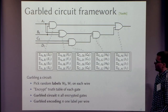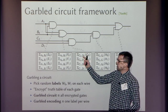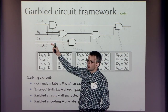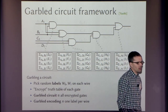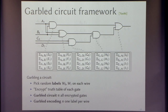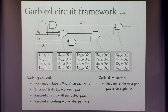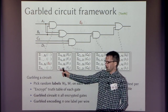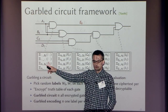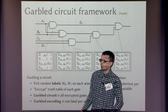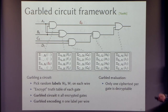We can encode truth values with a garbled encoding. For example, an encoding of 1, 0, 0, 1 on these wires — I just pick the appropriate wire label for each wire. If you know the garbled circuit and a garbled encoding of the input, then for each gate you should only be able to open exactly one of the ciphertexts, and you'll learn exactly one wire label for the output wire. That's the invariant.